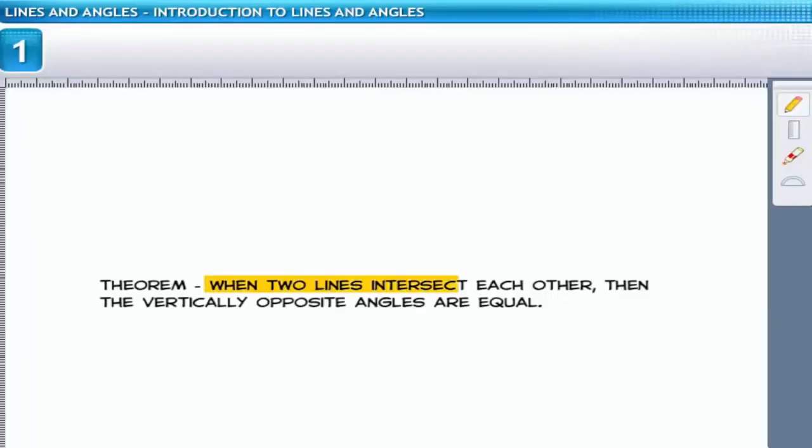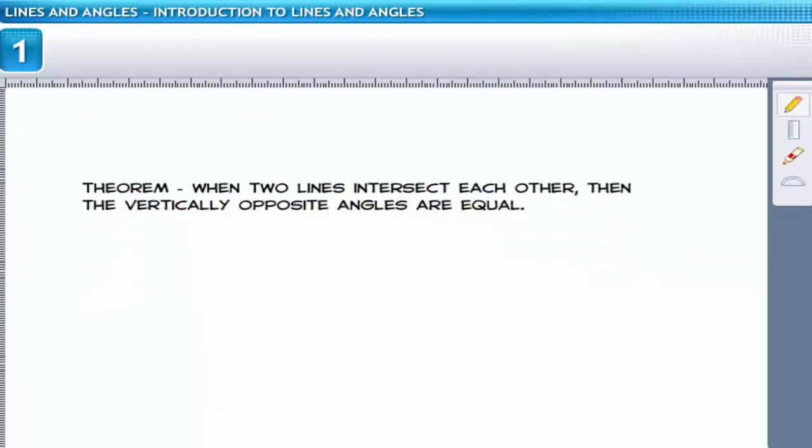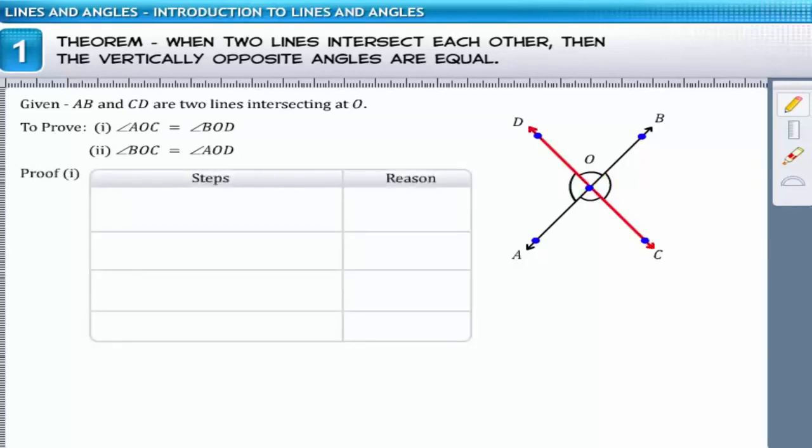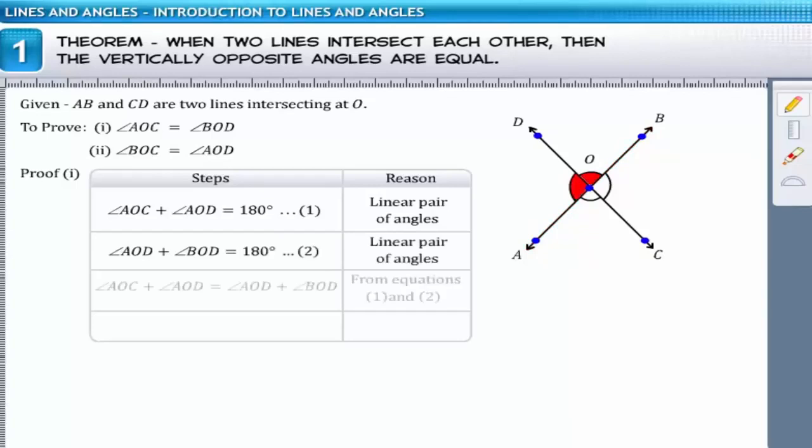The theorem states that when two lines intersect each other, then the vertically opposite angles are equal. Let lines AB and CD intersect at a point O. We have to prove that angle AOC is equal to angle BOD, and angle BOC is equal to angle AOD. Since CD is a line, angles AOC and AOD form a linear pair, and thus their sum is equal to 180 degrees. Similarly, AB is a line. Thus the sum of angles AOD and BOD is equal to 180 degrees. Now, from equation 1 and 2, the sum of angles AOC and AOD is equal to the sum of angles AOD and BOD. On equating, we get angle AOC as equal to angle BOD.